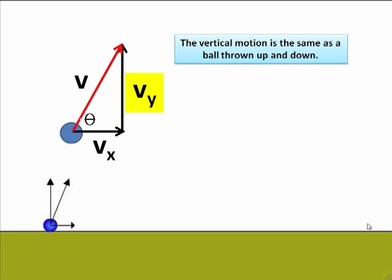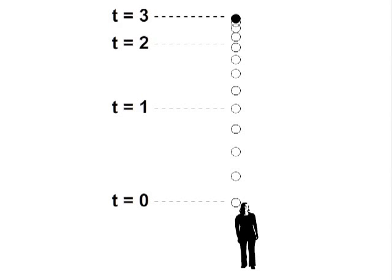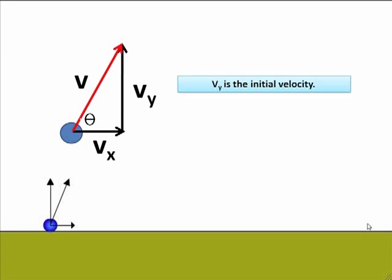reverses direction and comes down exactly the same as a ball thrown up and down. In fact, all of the mathematics we use to describe that motion is used to describe this projectile motion.